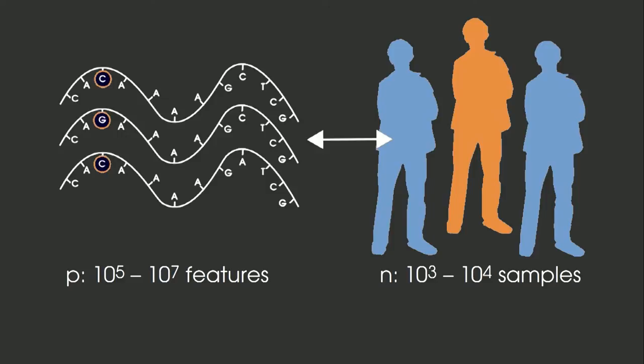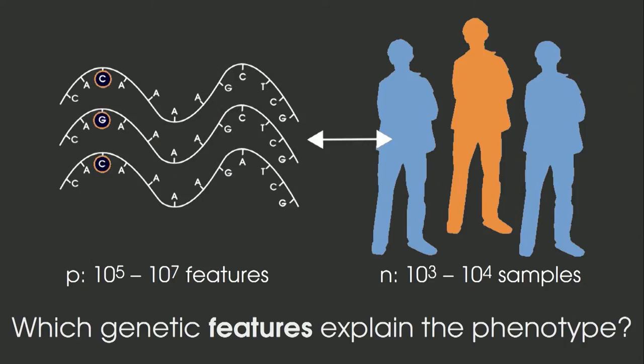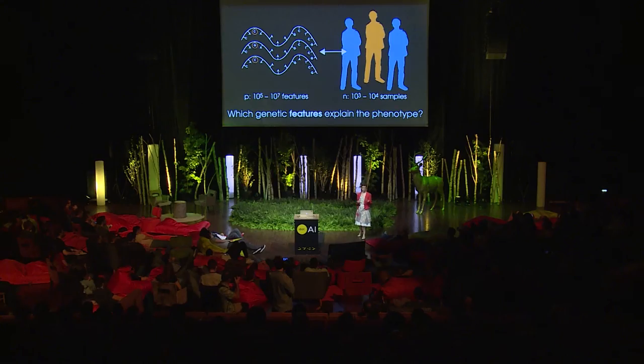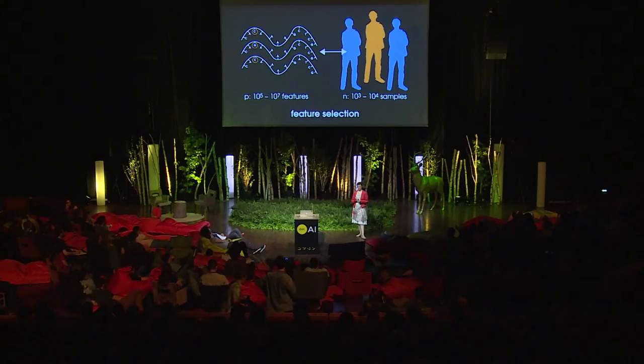The data I have is typically about 1,000 people — usually 1,000 controls and 1,000 cases. And those features I've described, we have hundreds of thousands of them, if not millions. What I and the geneticists I'm working with are interested in is figuring out, among all those features, which are the ones that explain the phenotype — whether they're orange or blue. So this is a feature selection problem with millions of features and only thousands of samples.